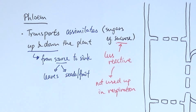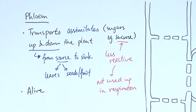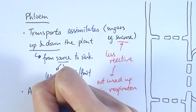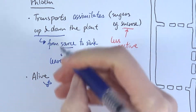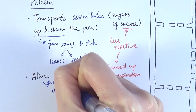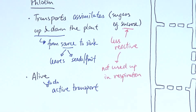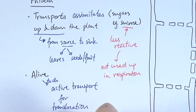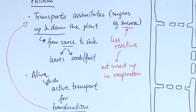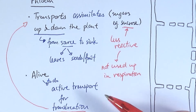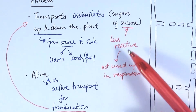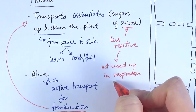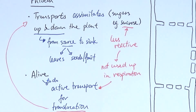Another key difference between phloem and xylem is that the phloem is alive. It's really important that it is alive, because that means it has all the organelles inside itself and can do active transport. Active transport is a very important aspect of translocation, which is the official term for the movement of assimilates. Translocation requires energy to work, so if the phloem were dead it would not be able to carry out translocation. Also, precisely because of that point, the sugar transported must be sucrose and not glucose, so that what we're moving is not accidentally used up in active transport during the process.